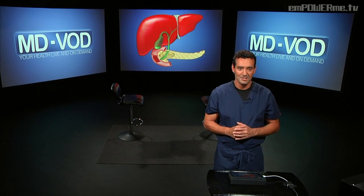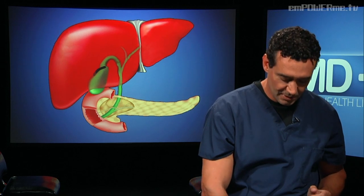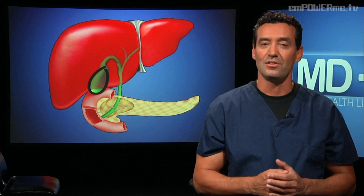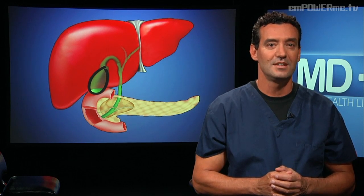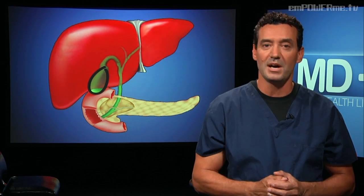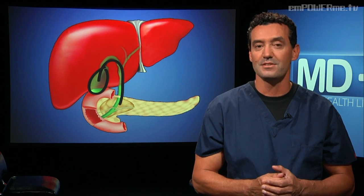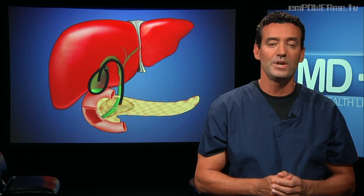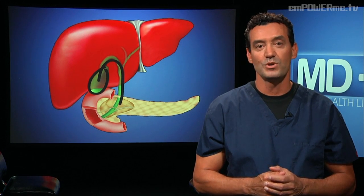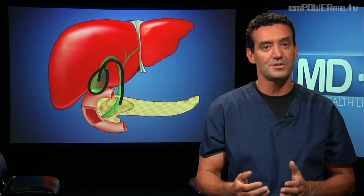Welcome back to MD-VOD, where today we're talking about gallbladder disease. Your gallbladder is a pear-shaped organ located just underneath your liver that stores bile, a fluid made by our liver to digest fat. As our stomach and intestines digest food, our gallbladder releases bile through a tube known as the common bile duct, which connects our gallbladder to the liver and to the small intestine. When we eat food containing fat, a substance known as cholecystokinin is released, which causes the gallbladder to contract and release bile into the intestine, which helps us metabolize fat.